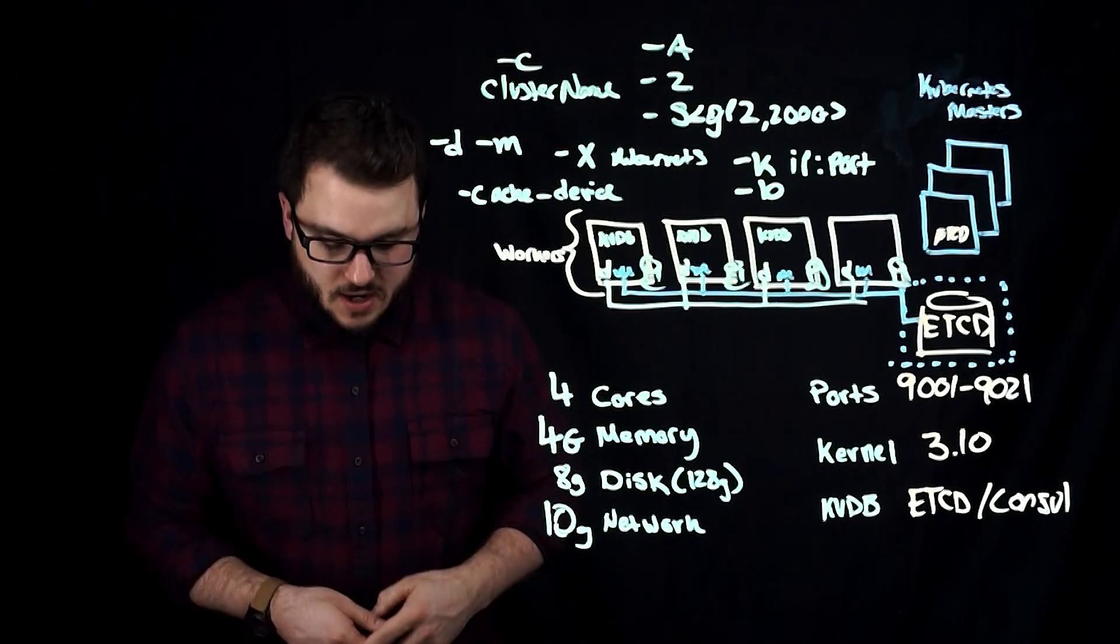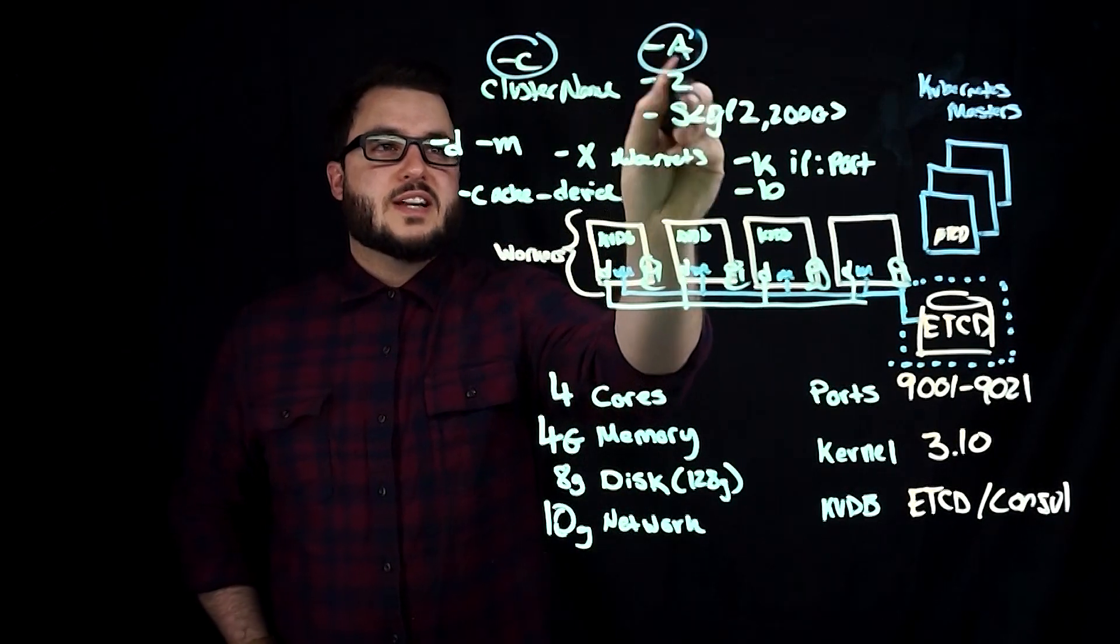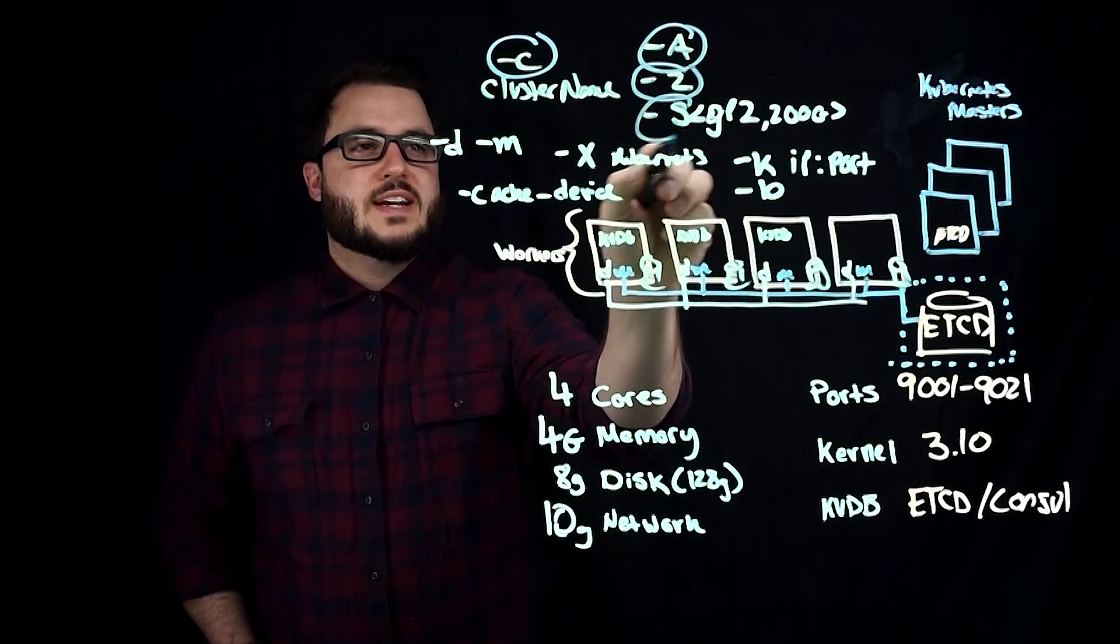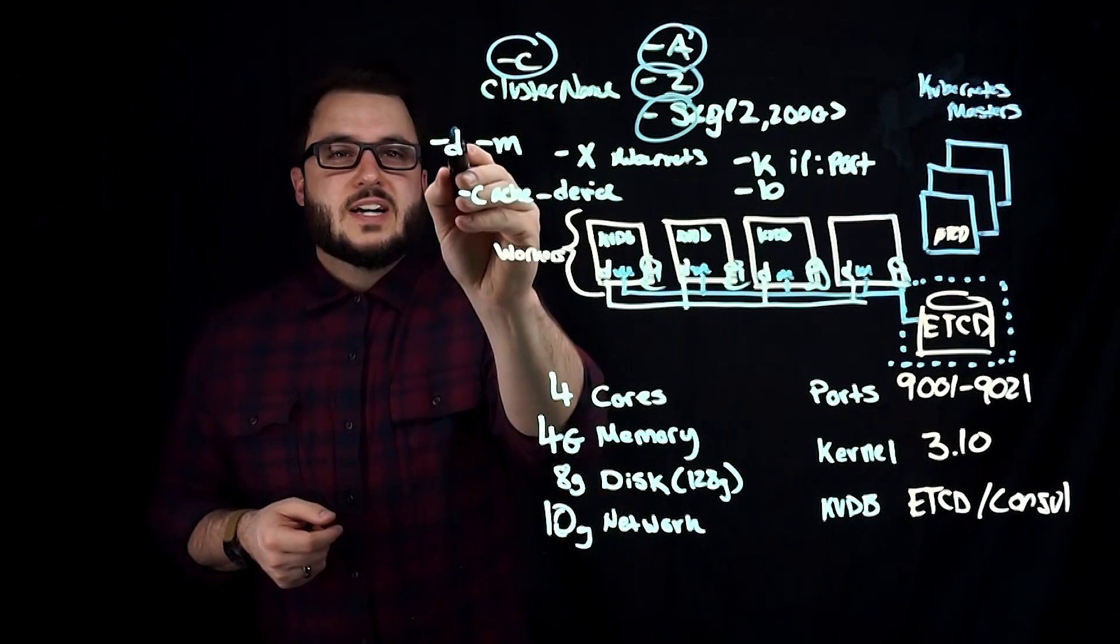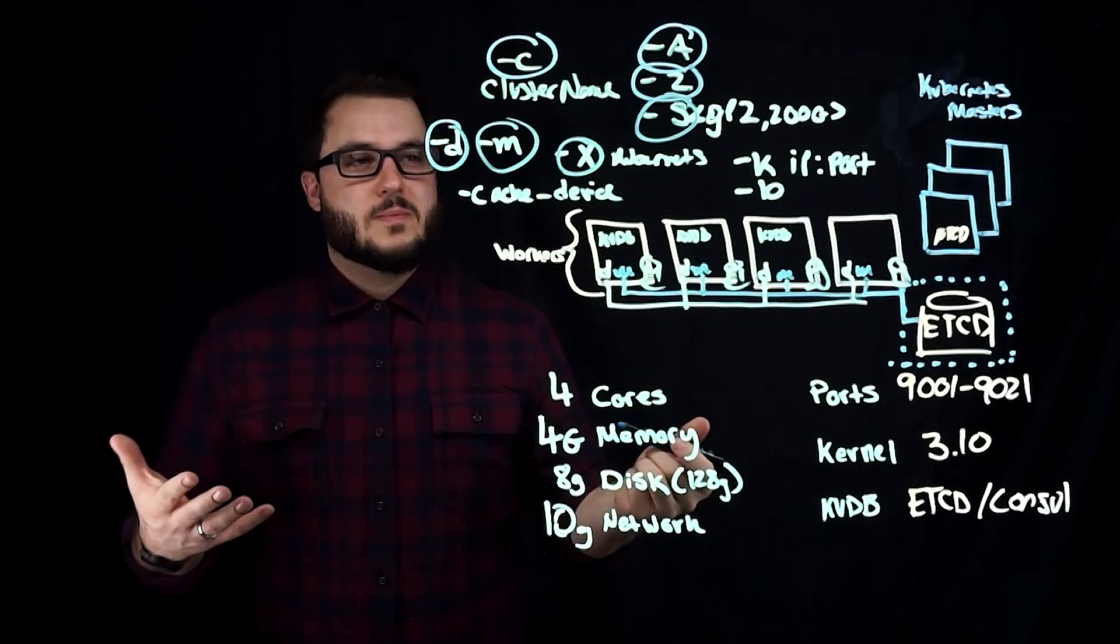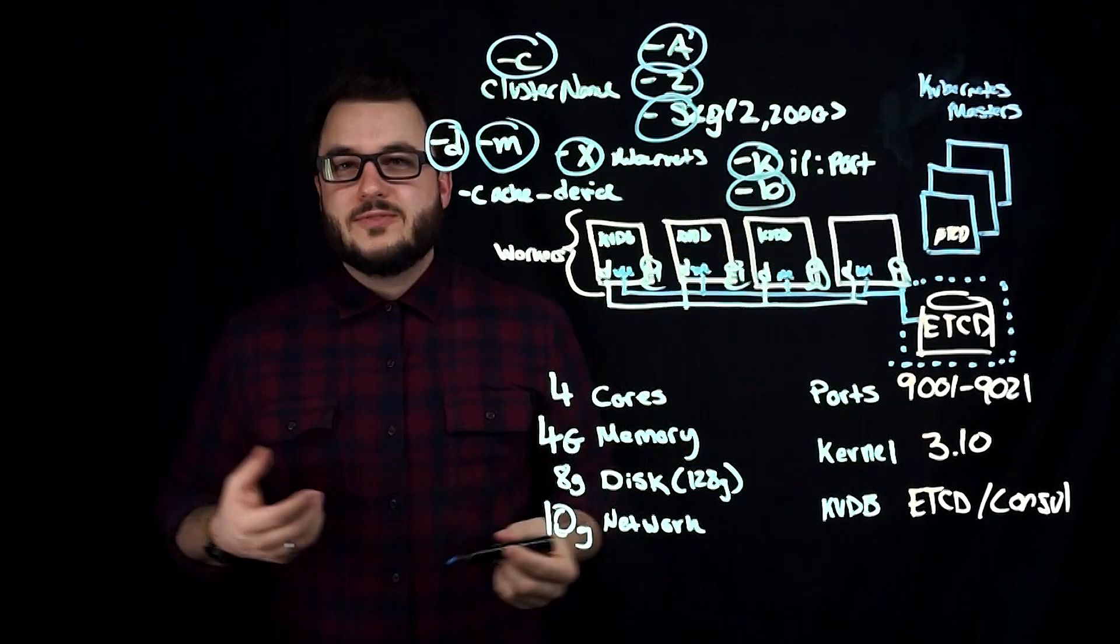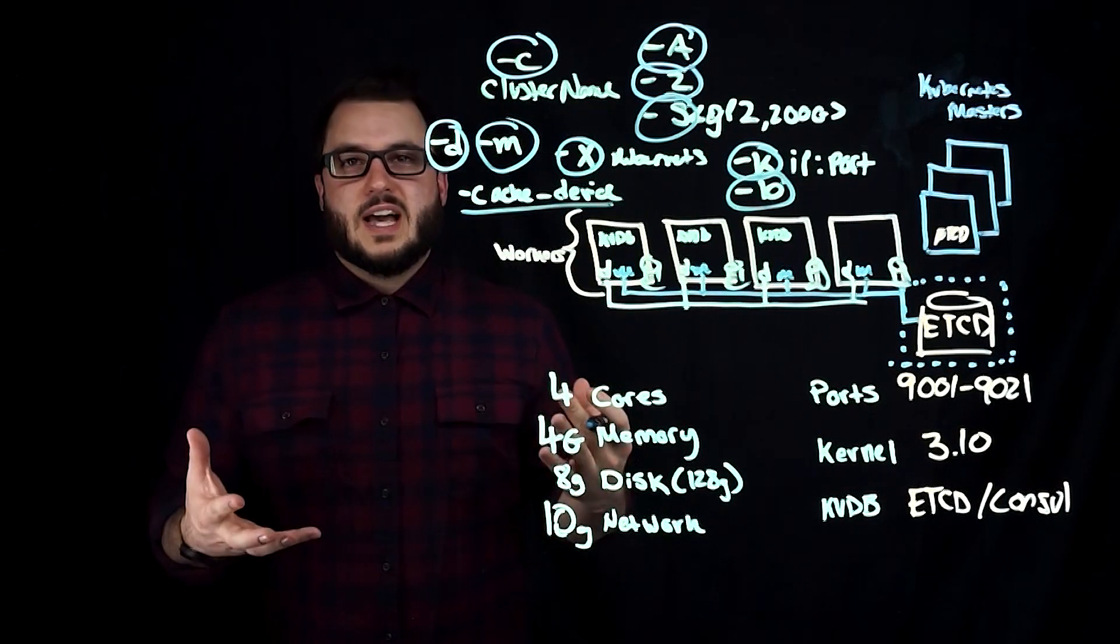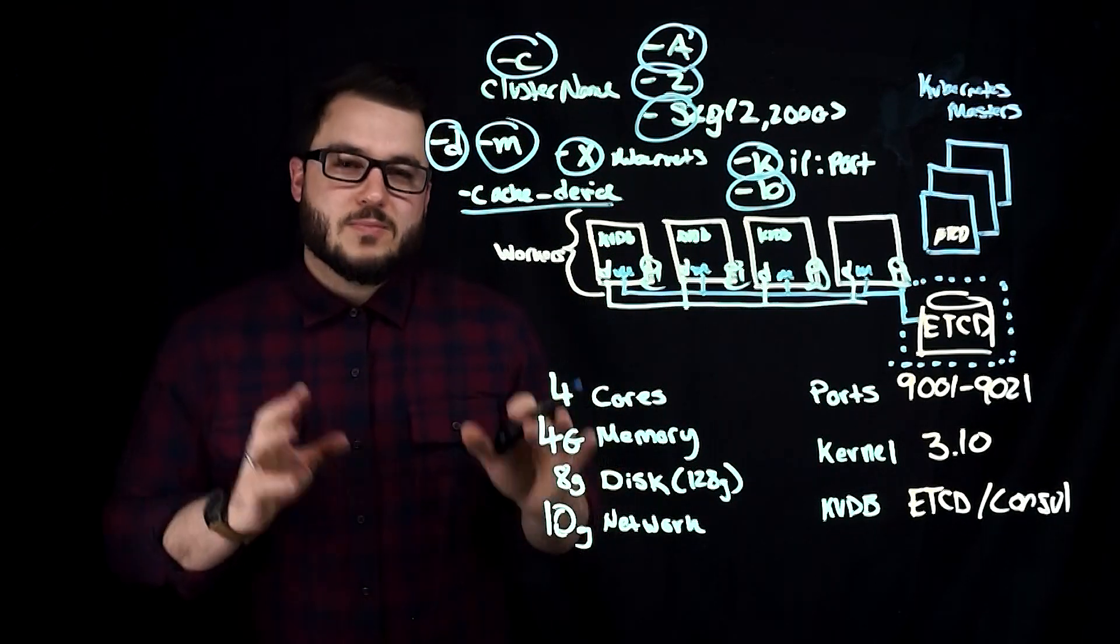These are some of the more important flags. Dash C for cluster name, dash A for everything in terms of grabbing disks, Z for zero storage node, S for the exact storage meaning the disk template or storage device itself, dash D for data network, dash M for the management network, X for scheduler like Swarm or Kubernetes, dash K for an external key value store, dash B for the internal key value store database, cache device for configuring cache device, dash metadata for having the metadata for internal key value store. And there are more, not a ton more, but I will link to what this looks like.